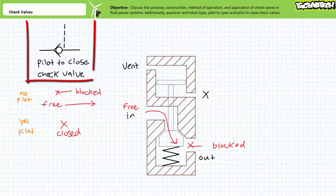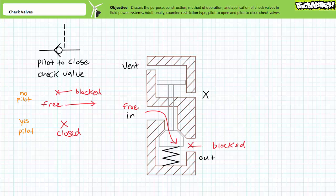The schematic symbol for a pilot to close check valve is essentially the opposite of a pilot to open check valve. Again, it's just like a normal check valve, only this time it includes a dashed pilot line on the ball side that pushes the ball to the seat.